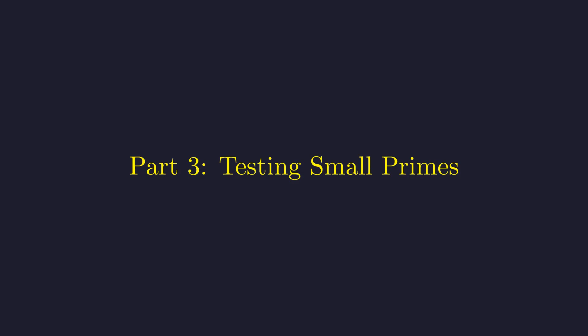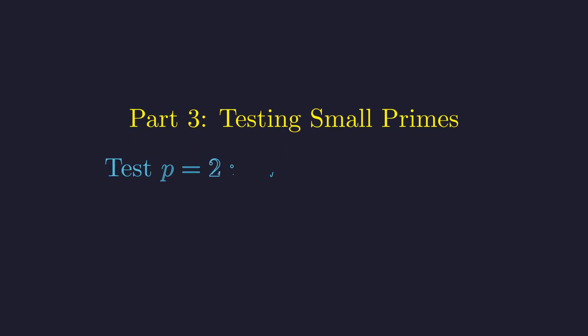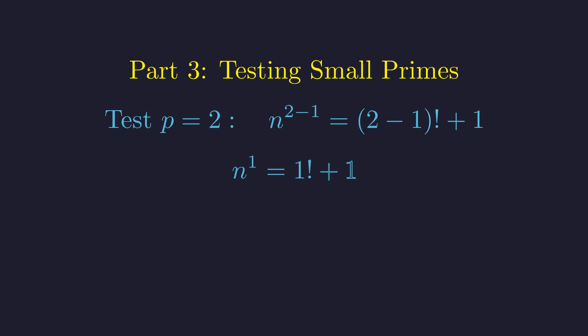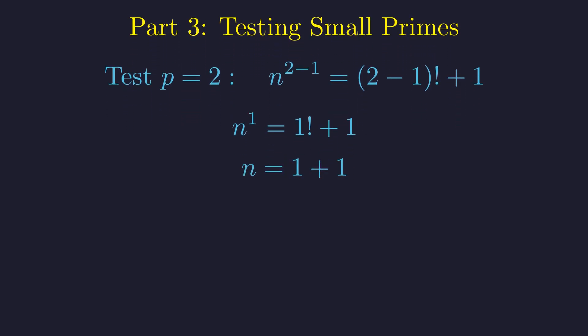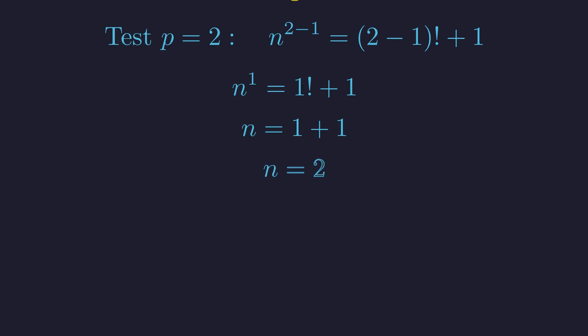Let's test some small prime values for p to see what happens. Let's start with the smallest prime, p equals 2. This simplifies to n to the first power equals 1 factorial plus 1. Evaluating the factorial gives us n equals 1 plus 1, which gives n equals 2.